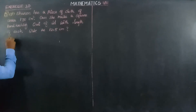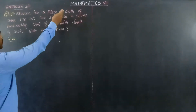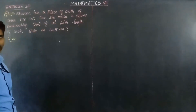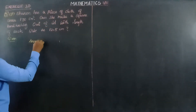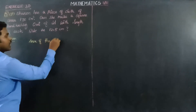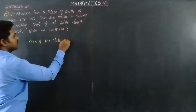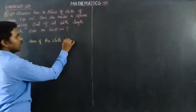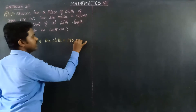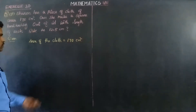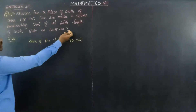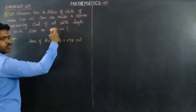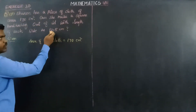So first, given: area of the cloth is equal to 170 cm square. And we want to make a handkerchief, so the side is given.